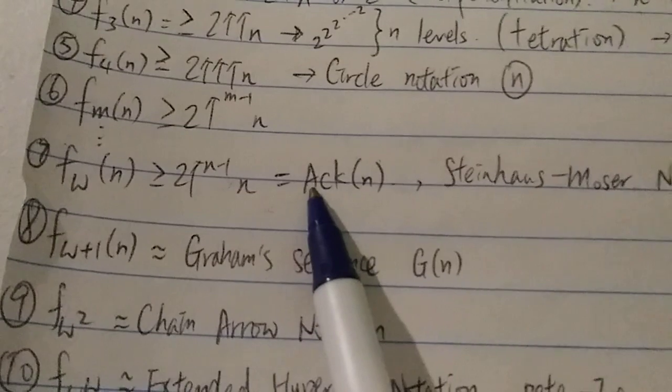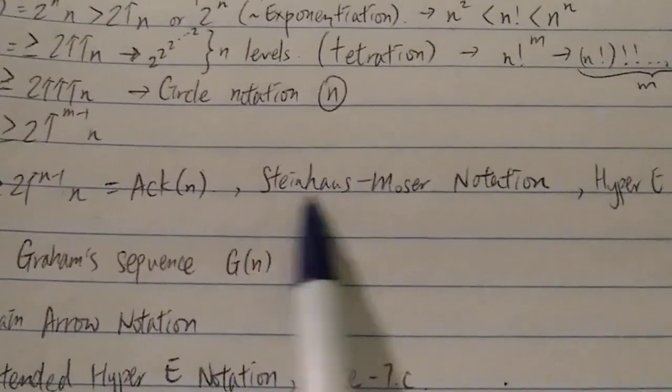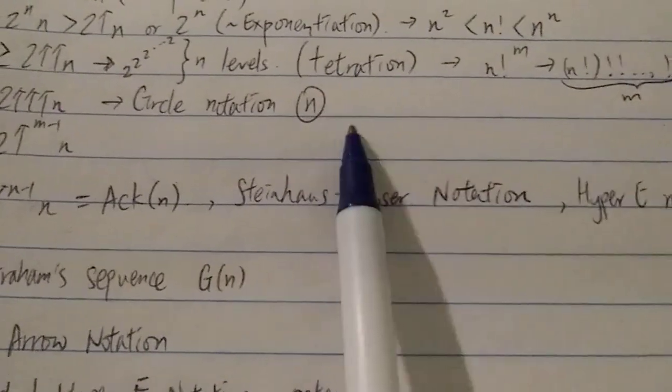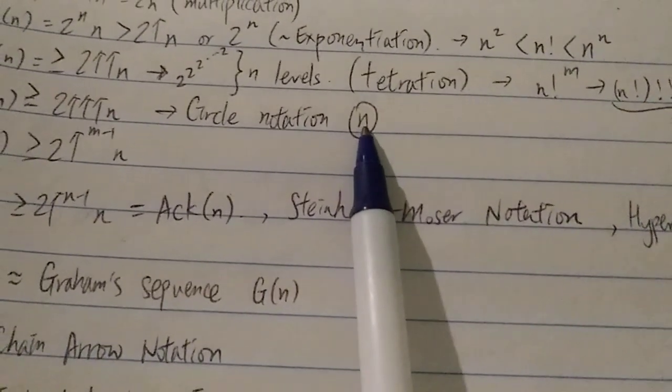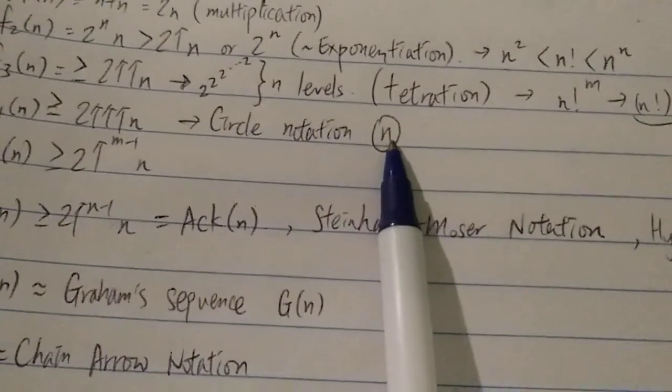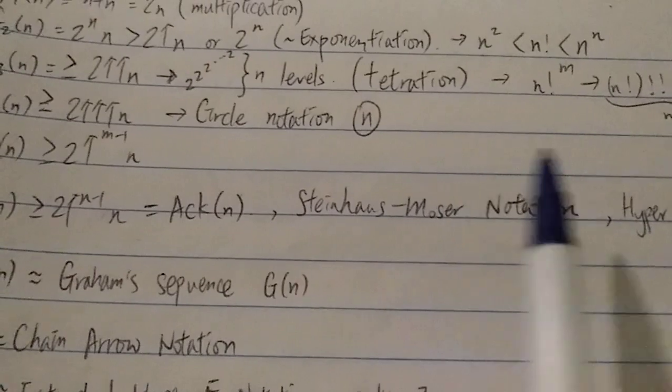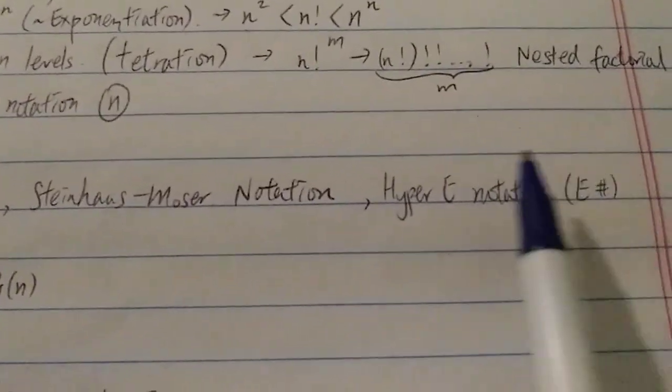Anyway, in this group, we have the Ackermann function. And of course, the Steinhaus-Moser notation, which is basically this one, but with n-gon. So n in an n-gon. This is n in the pentagon. But in this case, the number of sides or the number of gons is also increasing as well. And also, the hyper-E notation also grows at F_ω(n).